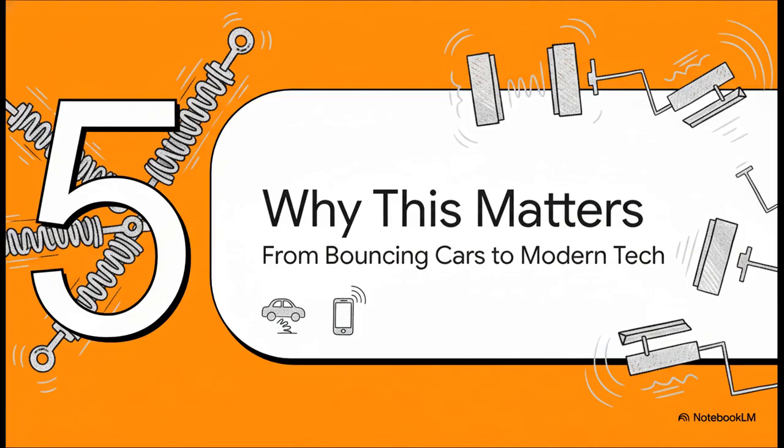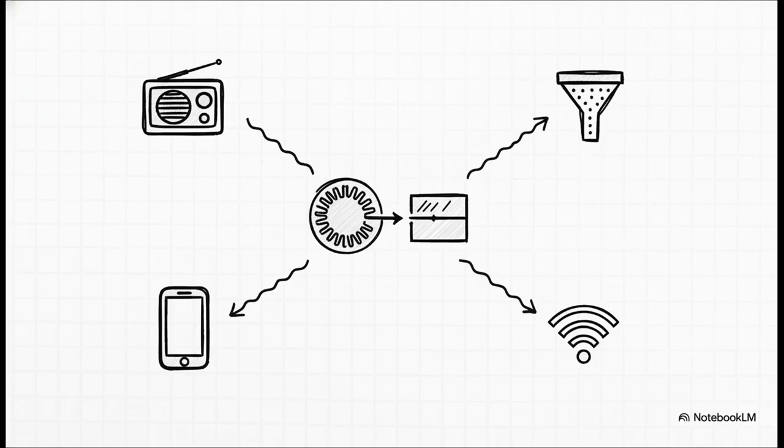What can we actually do with a controlled electronic bounce? The answer is pretty much everything that's wireless. Seriously, think about tuning an old radio. Every station is broadcasting on its own unique frequency, its own specific bounce.